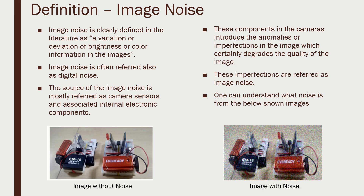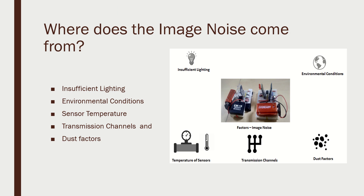Image noise is often called digital noise as well. The source of image noise is mostly from the camera sensors and associated internal electronic components. Here I have an image — on the left side without noise, and on the right side the same image with noise purposefully induced. Noise is unwanted content that prevents you from understanding the image content completely. Imperfections in electronic components and lighting contribute to image degradation.